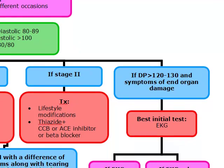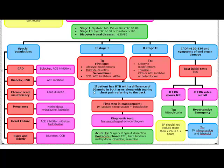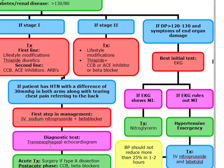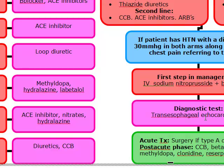If the patient comes in with hypertension and they have a difference of 30 mmHg in both arms with tearing chest pain that refers to the back, we're thinking aortic dissection. The first thing we're going to do is IV sodium nitroprusside plus a beta blocker. Our diagnostic test is going to be a transesophageal echocardiogram, and we'll need surgery if it's a type A dissection. After the acute phase, we can use calcium channel blockers, beta blockers, methyldopa, clonidine, or reserpine.